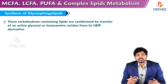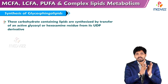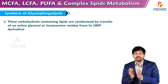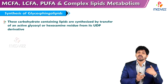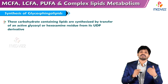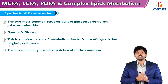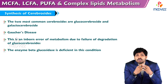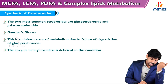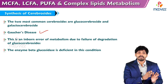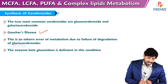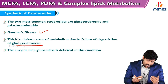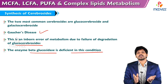Glycosphingolipids are carbohydrate-containing lipids synthesized by transfer of an active glycosyl or hexosamine residue from a UDP derivative — here we see involvement of UDP derivatives (uridine diphosphate), unlike phospholipids which used CTP and ATP. The two most common cerebrosides are glucocerebrosides and galactocerebrosides — glucocerebrosides contain glucose and galactocerebrosides contain galactose as the major carbohydrate. Gaucher's disease is associated with failure of degradation of glucocerebrosides; the enzyme beta-glucosidase is deficient, causing glucocerebroside accumulation.